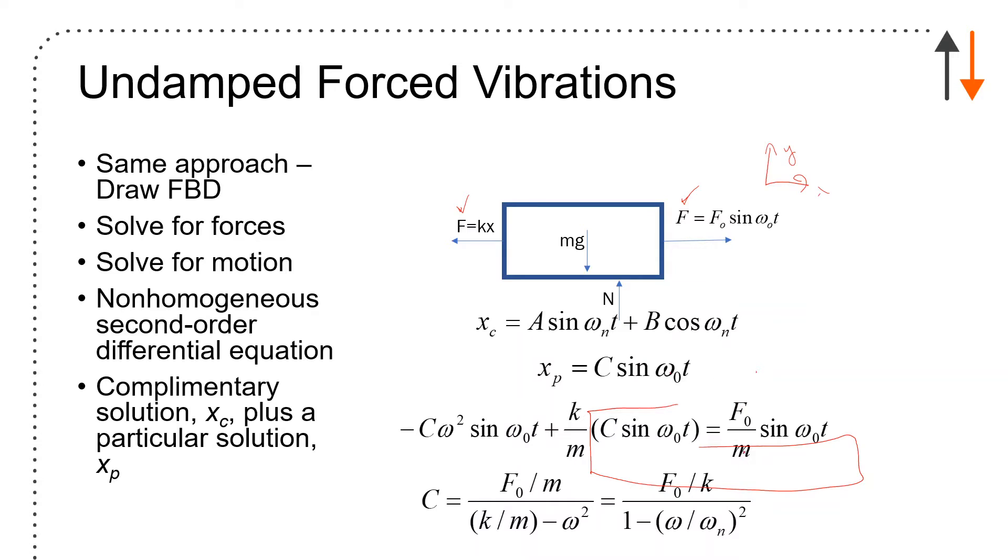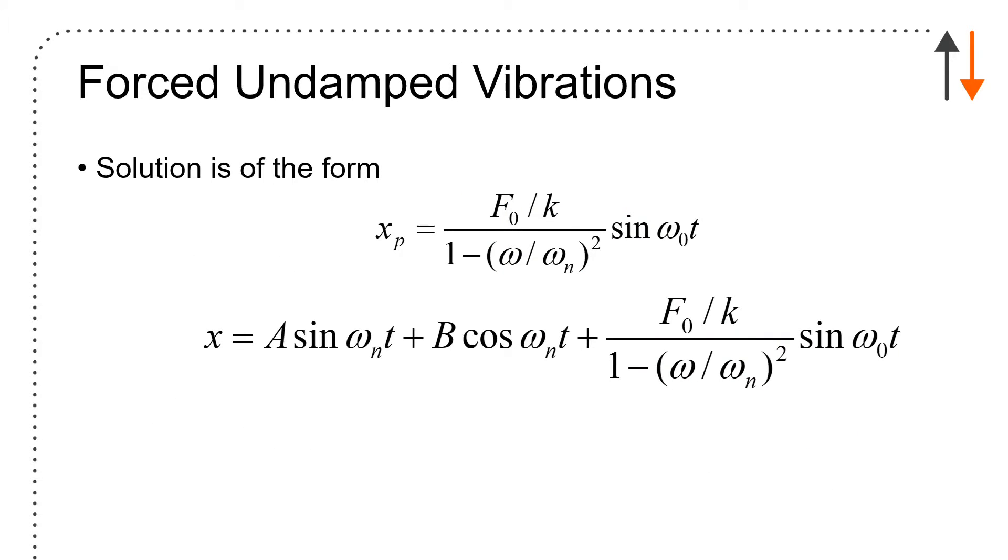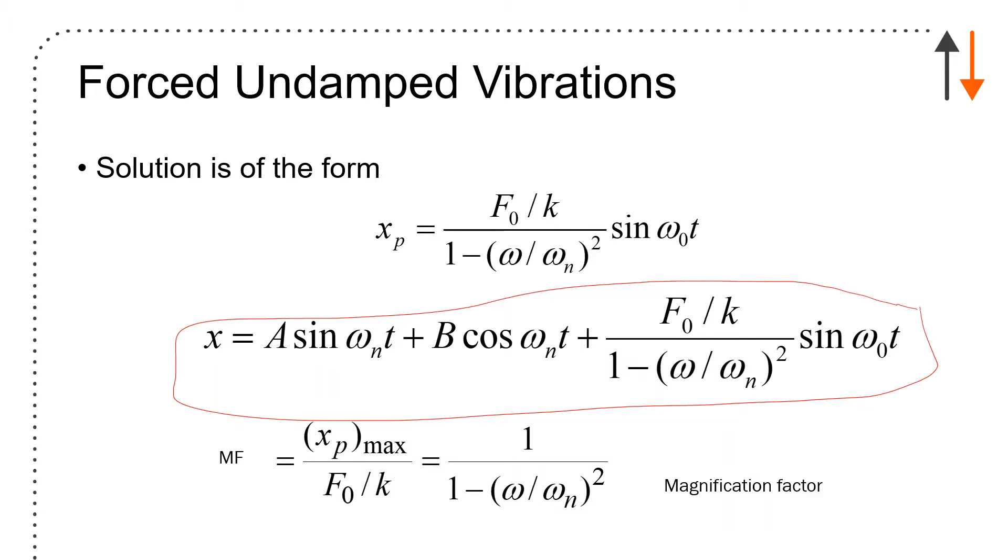That leads to an interesting result which is this magnification term. When omega and omega_n start to approach each other, you risk having significant amplification and the problem becoming undefined. If you have a solution for x, it looks something like this. You should be aware of the magnification factor which is 1 over (1 minus (omega/omega_n)²).